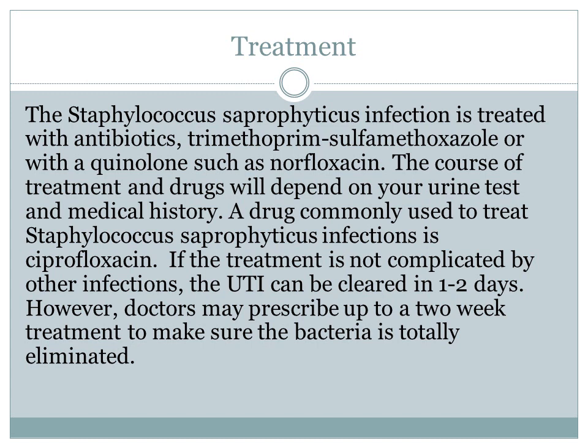Treatment: The Staphylococcus saprophyticus infection is treated with antibiotics — trimethoprim, sulfamethoxazole, or quinolones such as norfloxacin. The course of treatment and drugs will depend on your urine test and medical history. A drug commonly used to treat Staphylococcus saprophyticus infection is ciprofloxacin. If the treatment is not complicated by other infections, the UTI can be cleared in one to two days. However, doctors may prescribe up to a week or two of treatment to make sure the bacteria is totally eliminated.